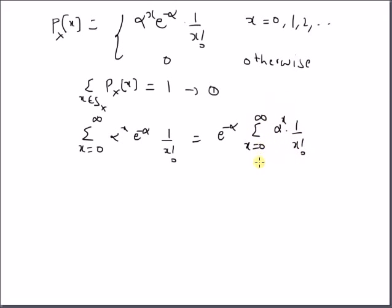So, by definition, this summation of this infinite series is equal to e power alpha. That is, the Taylor series expansion of the exponential function is nothing but equal to x equal to 0 to infinity alpha power x into 1 by x factorial.